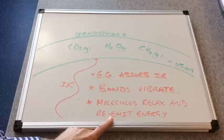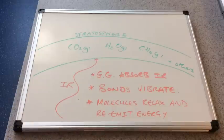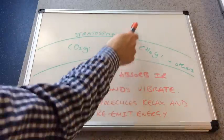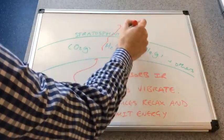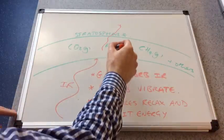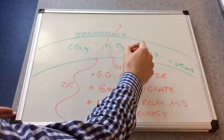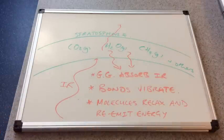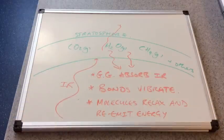Now the important thing to stress here is that when the molecules relax and re-emit this energy, it's re-emitted in all directions. So some of this energy will pass out through the atmosphere, but some of it, quite a lot of it even, is re-emitted back down to Earth and it's these infrared rays that actually warm up the atmosphere.